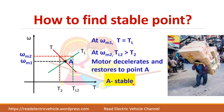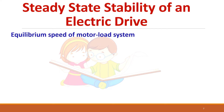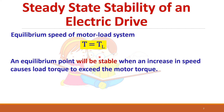Point A is a stable point. For any problem, you can check either condition — increase in speed or decrease in speed — and determine stability. The equilibrium point of a motor-load system is stable when an increase in speed causes the load torque to exceed the motor torque. This is the key stability condition.